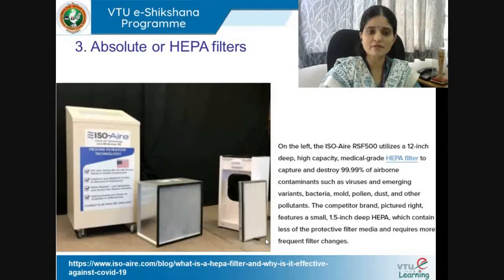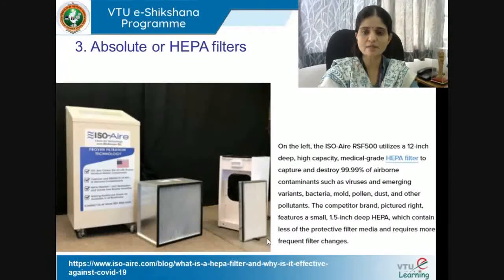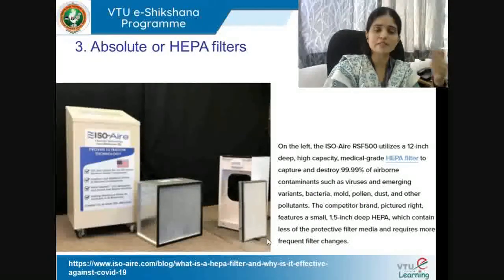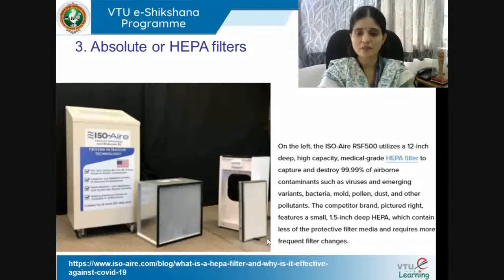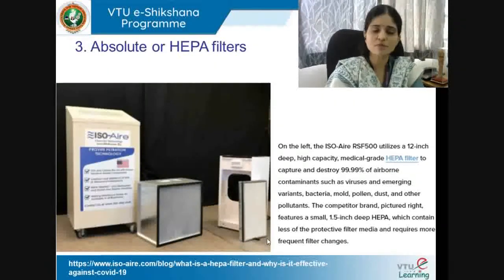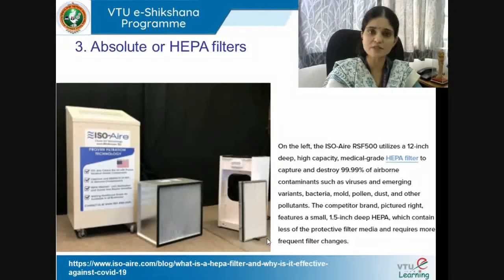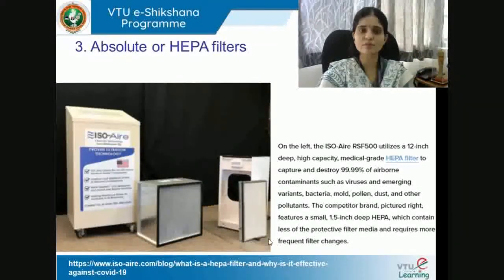Comparing two HEPA products: the ISO Air RSF 500 uses a 12-inch deep high-capacity medical-grade HEPA filter achieving 99.99% removal of airborne contaminants such as viruses, emerging COVID variants, bacteria, mold, pollen, and dust. A competitor brand features a smaller 1.5-inch deep HEPA filter containing less protective filter media and requiring more frequent filter changes. Products should always be compared for best efficacy suited to your needs.